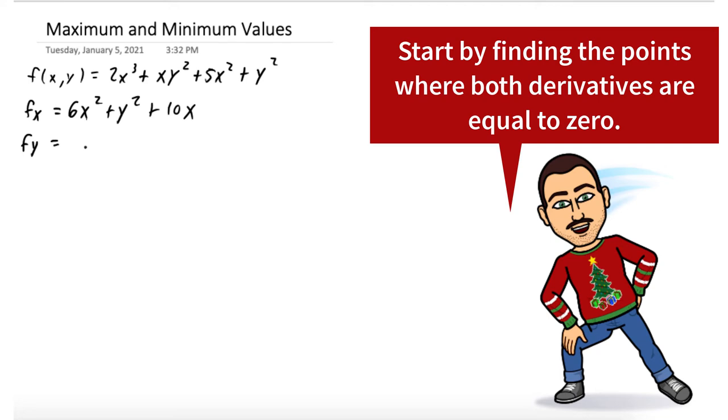Then we'll find the partial with respect to y. And again, we're going to eventually set it equal to zero. Here we get 2xy + 2y. And it seems like setting the partial with respect to y equal to zero is easier. So we'll start with that. But we have to do both eventually. So we have 2xy + 2y = 0. Let's factor out the y. And so we have y(2x + 2) = 0. So this gives us the case that either y = 0 or x = -1.